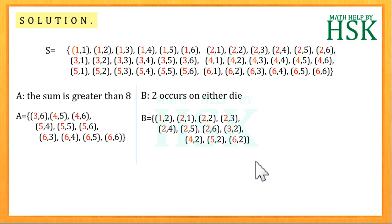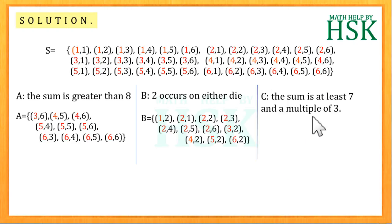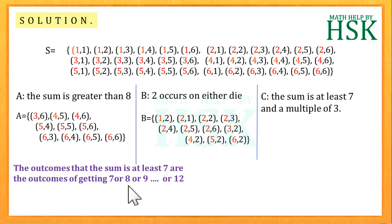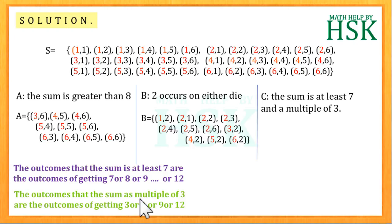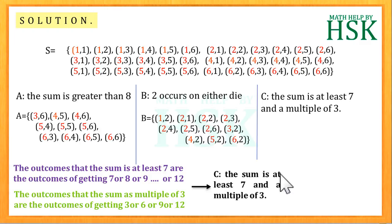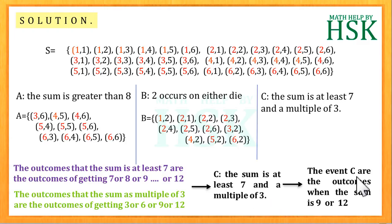Finally we shall take the event C. C is the event such that the sum is at least 7 and a multiple of 3. Since the outcomes when the sum is at least 7 are those giving total 7, 8, 9, up to 12, and the outcomes when the total is a multiple of 3 are those giving total 3, 6, 9, or 12, hence the required outcomes are those with sum equal to 9 or 12. These outcomes are (4,5), (5,4), (3,6), (6,3), (6,6). These events form the set C as shown.